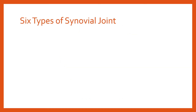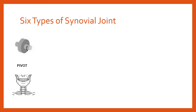There are three classifications — fibrous, cartilaginous, and synovial — and under the classification of synovial there are six types. The first type is a pivot joint. A really good example of a pivot joint would be the atlas and axis vertebrae, the top two vertebrae at the top of the spine, which fit together to allow rotational movement. So a pivot joint, a synovial joint, allows rotational movement.